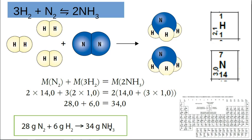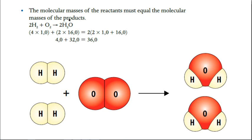This is how we prove the law of conservation of mass: take the balanced equation, get the masses of the atoms from the periodic table, and show that masses on the left-hand side equal masses on the right-hand side. For example, the formation of water: two hydrogen plus oxygen goes to water. Hydrogen is one, oxygen is 16.